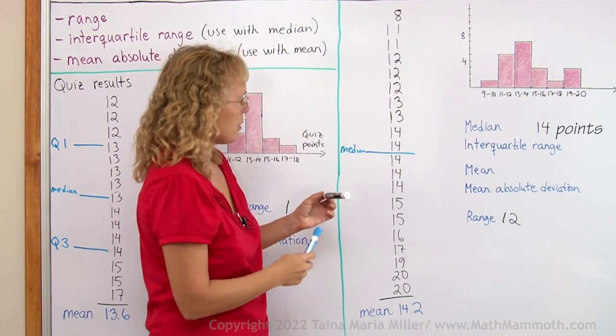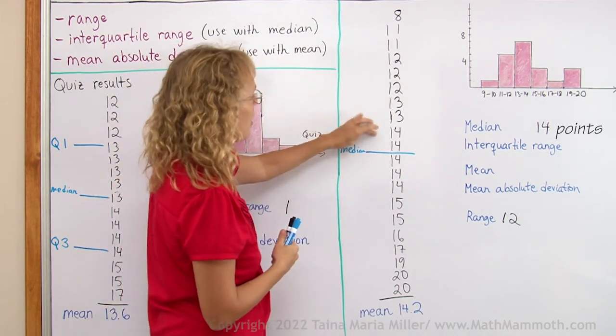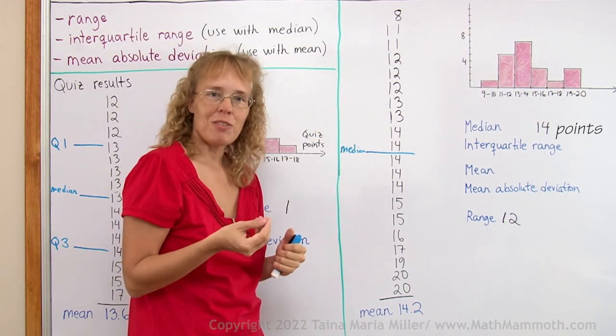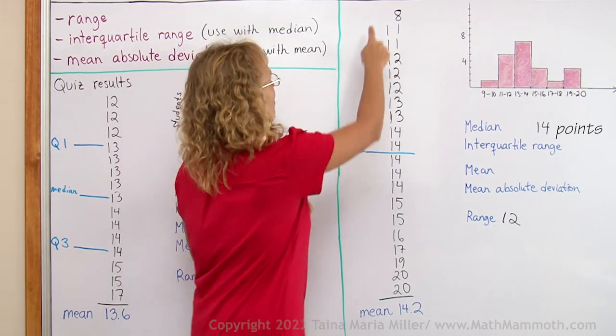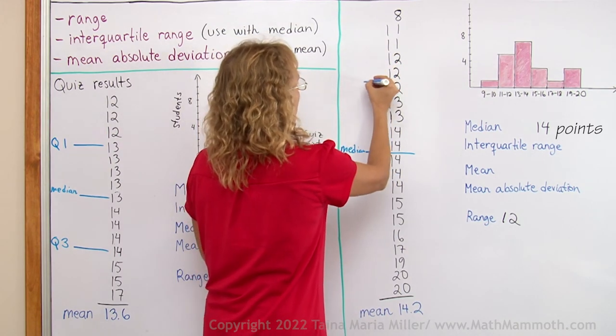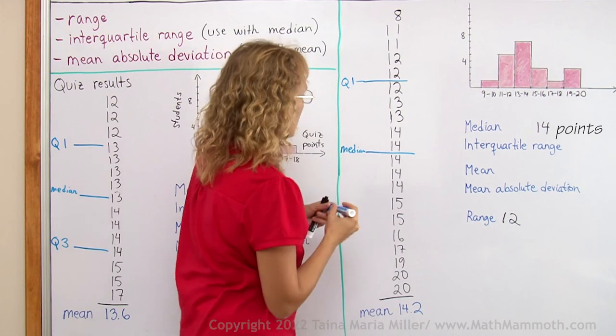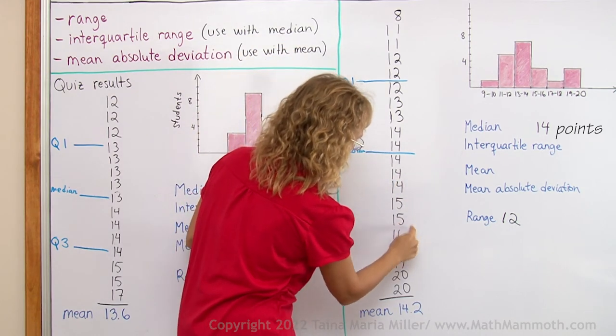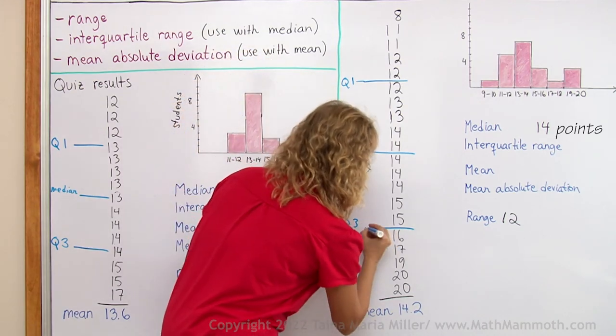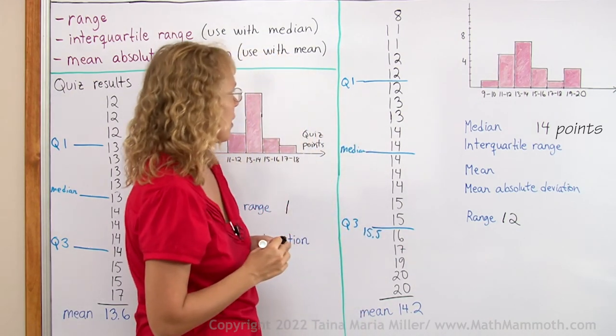And then the first quartile. Here I have 10 items. And so it will be the average of the fifth and sixth item. Five and six. It's 12 here. This one would be 15.5.